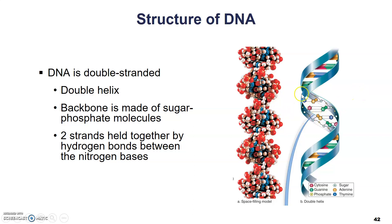Those two backbones are held together by the nitrogenous bases in the center. More specifically, they're held together by hydrogen bonds that form between the nitrogen bases of one strand and the nitrogen bases of the other strand. These hydrogen bonds are relatively weak individually, but when many bonds exist between nitrogen bases throughout the twisted ladder, they actually provide a lot of stability for the DNA molecule. That's fortunate because DNA is the molecule that encodes all the genetic information.